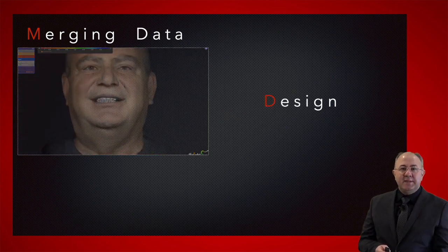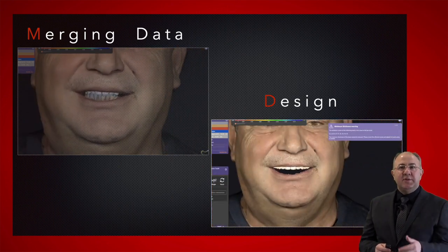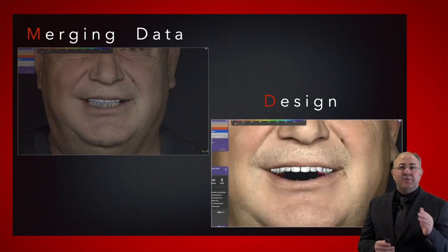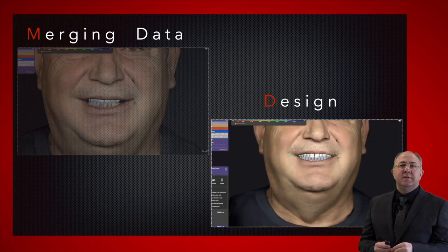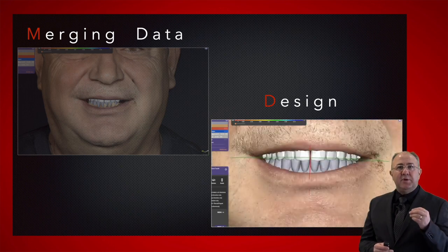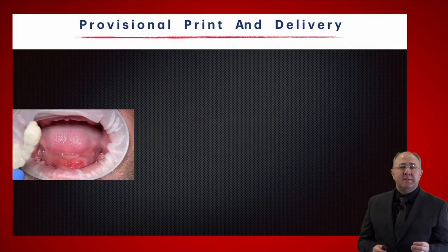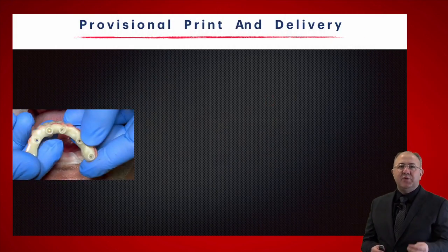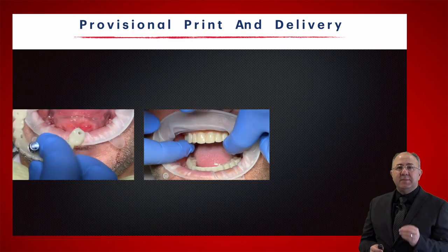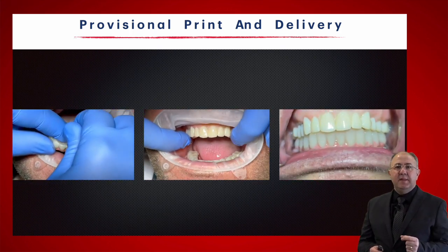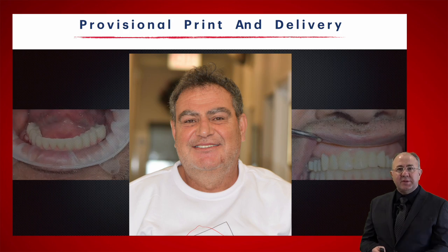We can now do the designing — a new upper denture and a lower conversion for the patient. I confirm I'm happy with the design: how much tooth I'm showing. I can consult with the patient and communicate my plan. This shows the delivery of the lower conversion 24 hours after extraction and implant placement, and the delivery of the temporary new upper denture. This is how the patient looks only 24 hours after surgery was completed.